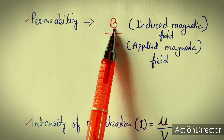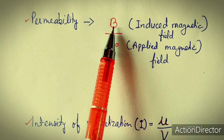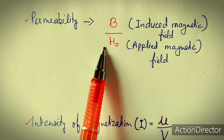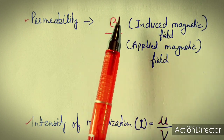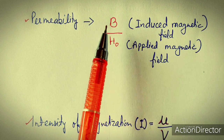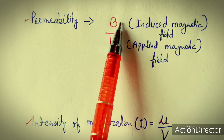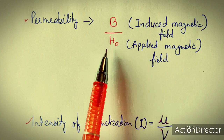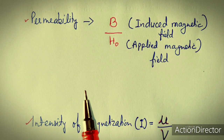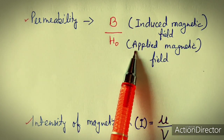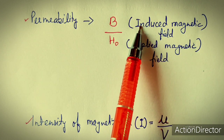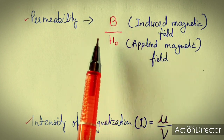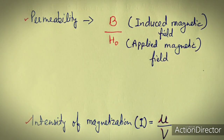The ratio of the induced magnetic field B and the applied magnetic field H₀ is known as permeability. Permeability is the ratio of induced magnetic field and applied magnetic field. The induced magnetic field may be higher than H₀ or may be smaller than H₀ - those situations will be discussed later on.